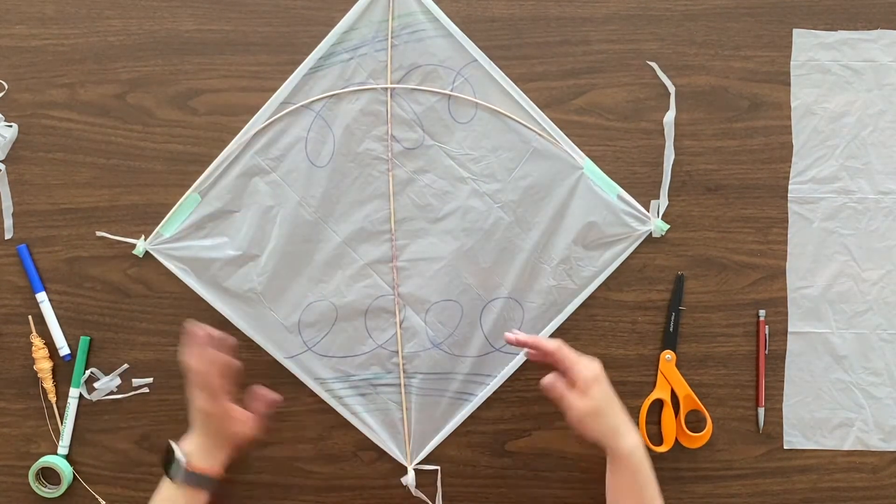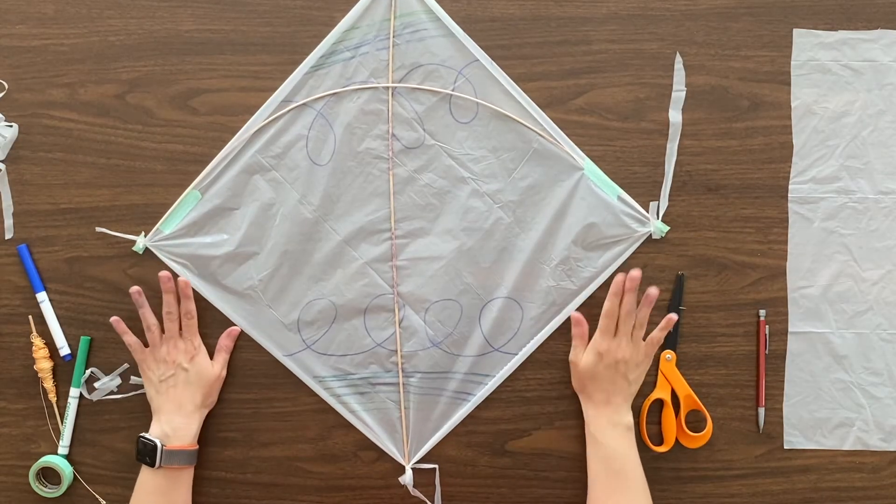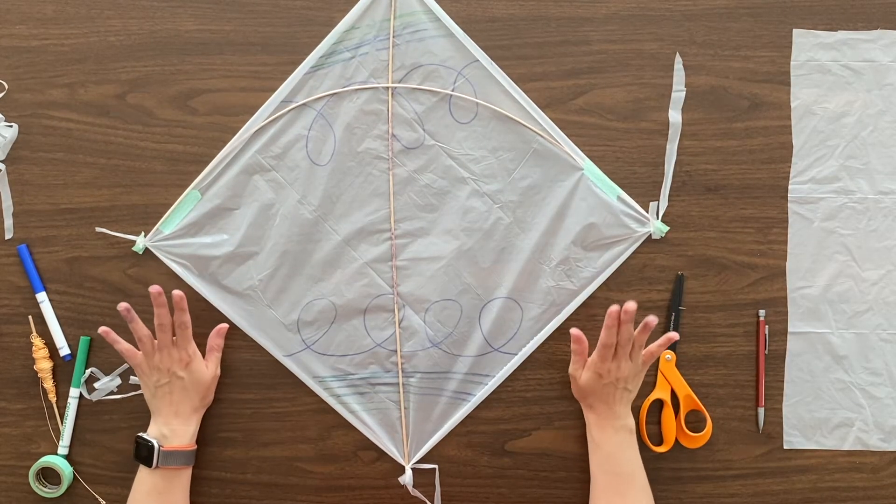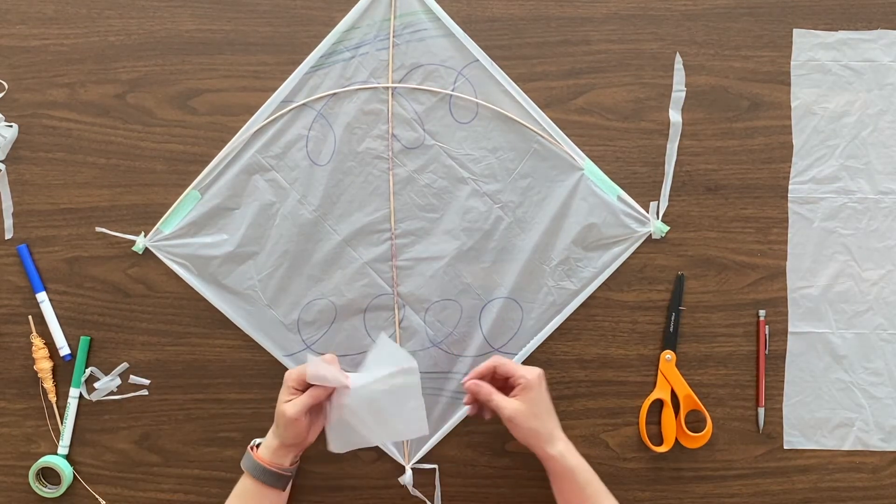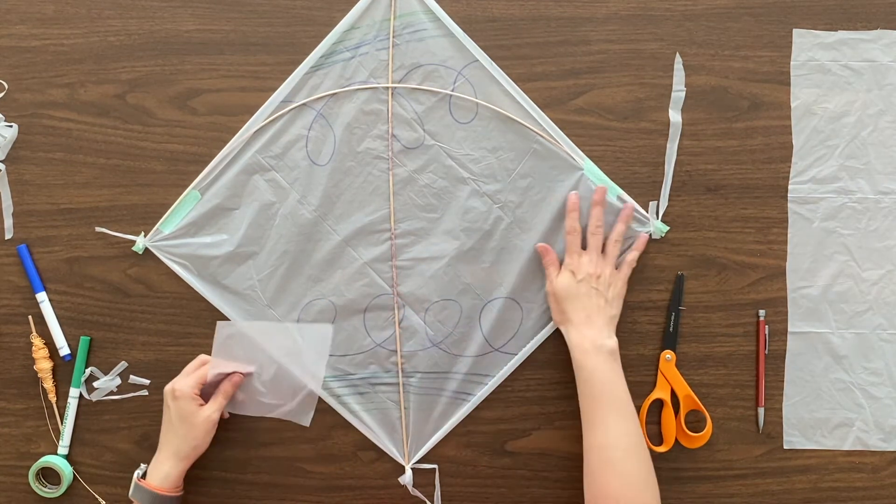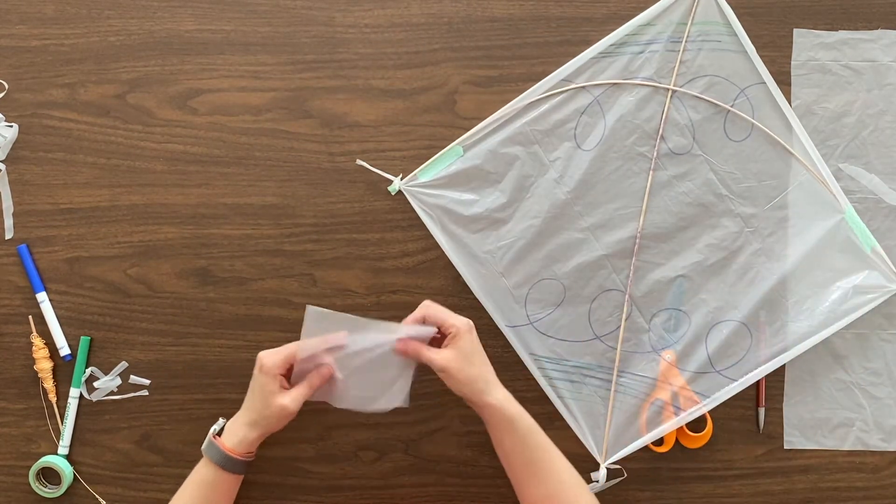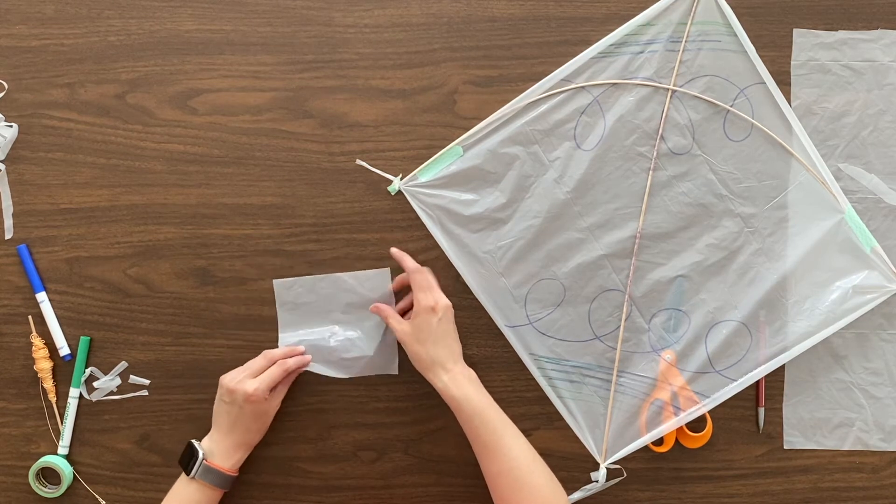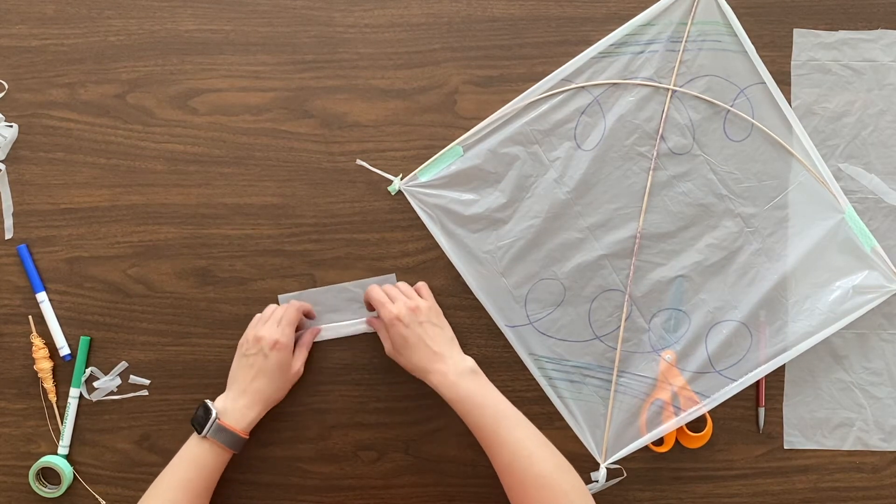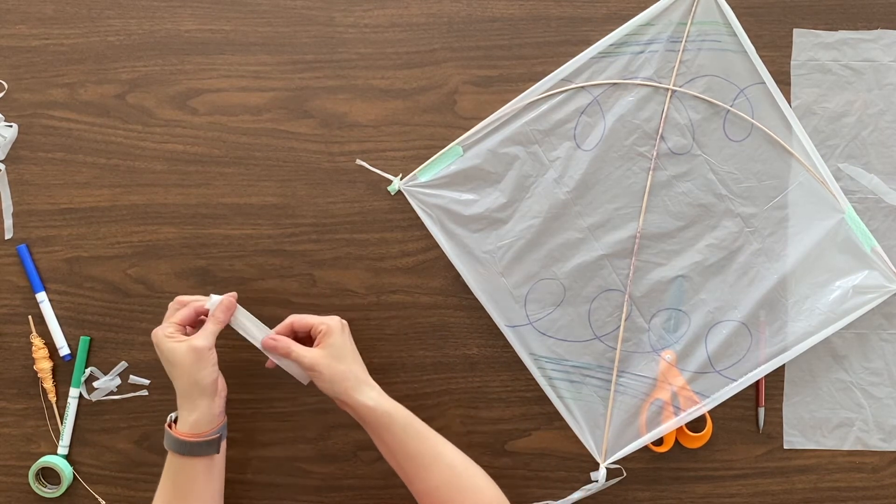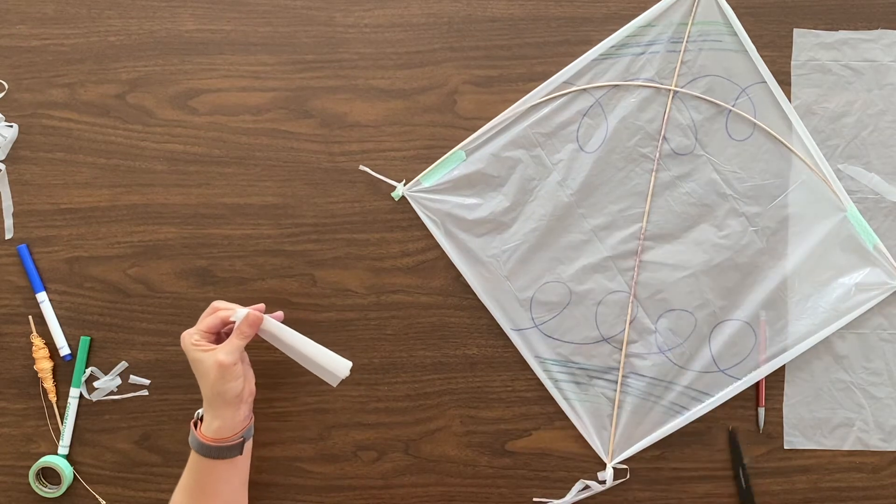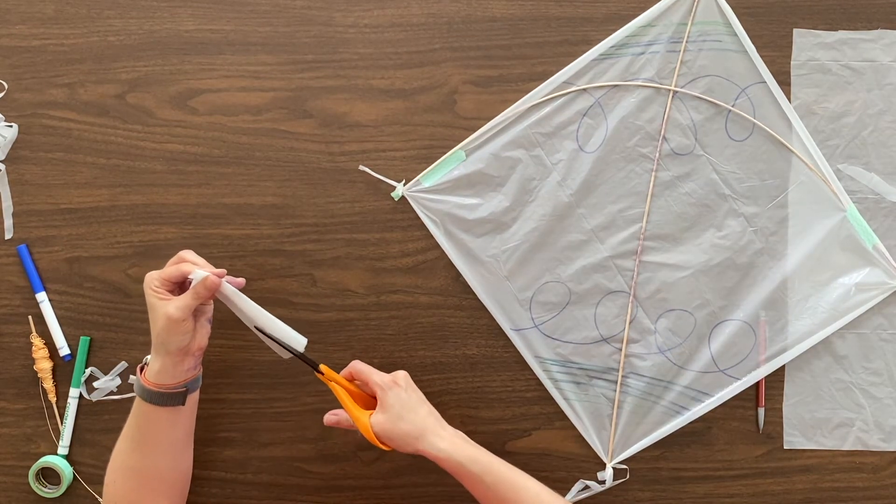Okay, now you have a body of the kite. So your next step is to add some balance. To do this, we're going to add some fringe to the sides. I have my small square of plastic. I'm going to roll it up, put my fingers on the end there, and use my scissors to cut some strips.